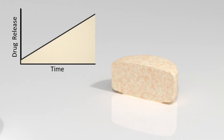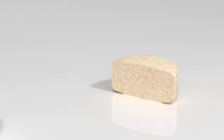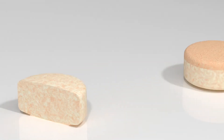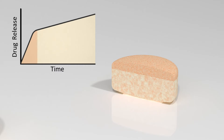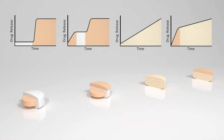By applying API throughout the erodible layer, Aurologic can produce a zero-order sustained release profile where your drug will release at a constant rate no matter where it is in the body. This is an example of an immediate release followed by a sustained release, showcasing that these techniques can be combined to tailor a tablet to a specific therapeutic need.